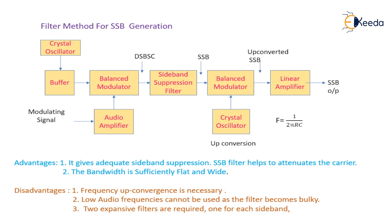The third disadvantage is that two expensive filters are required — one for each sideband. The sideband suppression filter consists of one filter for the lower sideband and one for the upper sideband. This concludes the filter method for SSB generation.